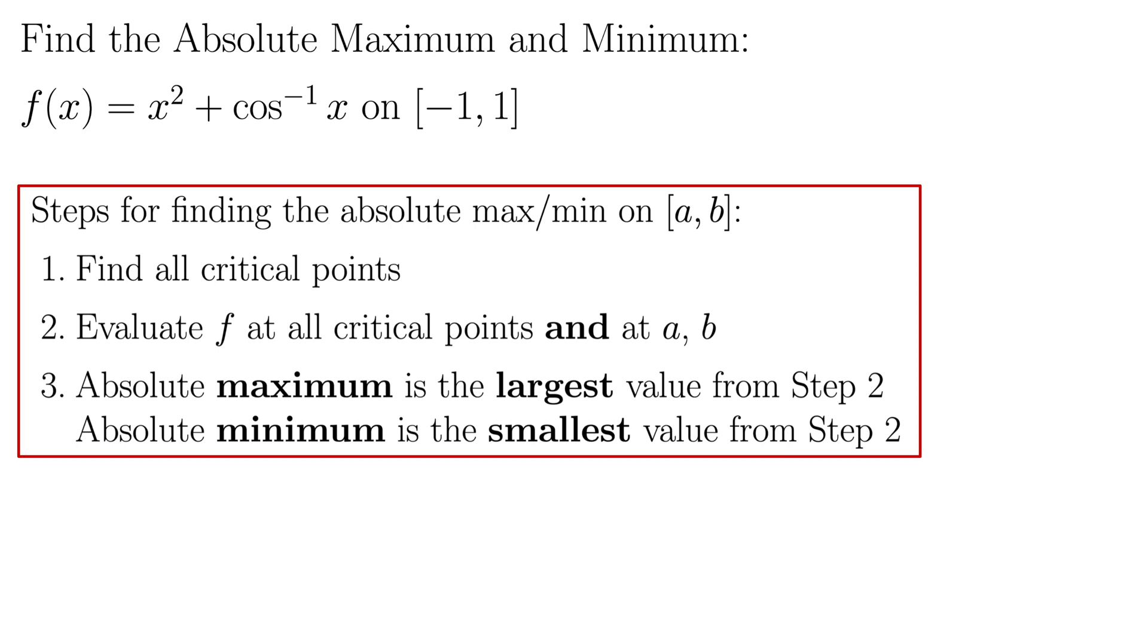Let me remind you of the steps. Step one is to find all the critical points. Step two is to evaluate f at all the critical points and at the endpoints. And then you basically take the largest from step two, that's the maximum, and the smallest from step two, that's the minimum.